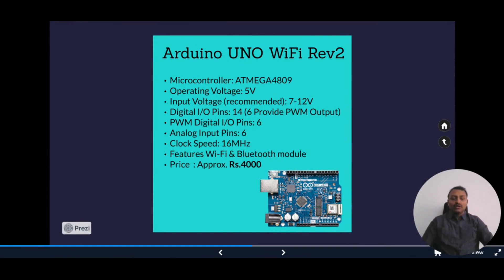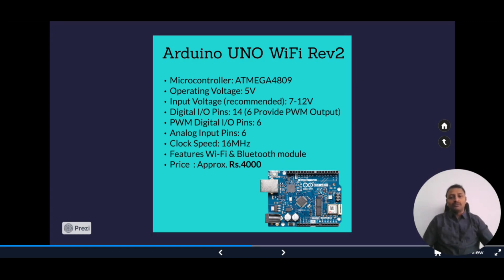The first board is the Arduino Uno Wi-Fi Rev2, the latest from the makers of the original Arduino Uno. It is essentially the Arduino Uno Rev3 with built-in Wi-Fi connectivity, taking IoT development to the next level. The Wi-Fi connection is secured with the new ECC608 crypto chip accelerator, and it comes with the Atmega 4809 microcontroller featuring 14 digital input-output pins, 6 analog inputs, and a USB port for programming and power.